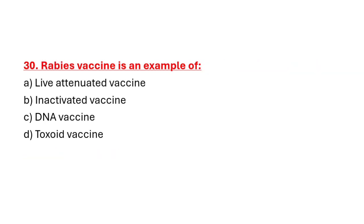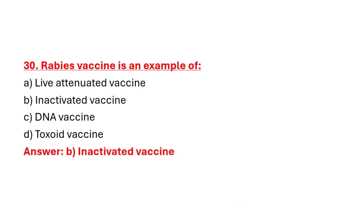Question 30: Pregnancy vaccine is an example of. Option A: Live attenuated vaccine. Option B: Inactivated vaccine. Option C: DNA vaccine. Option D: Toxoid vaccine. Correct answer is Option B: Inactivated vaccine.